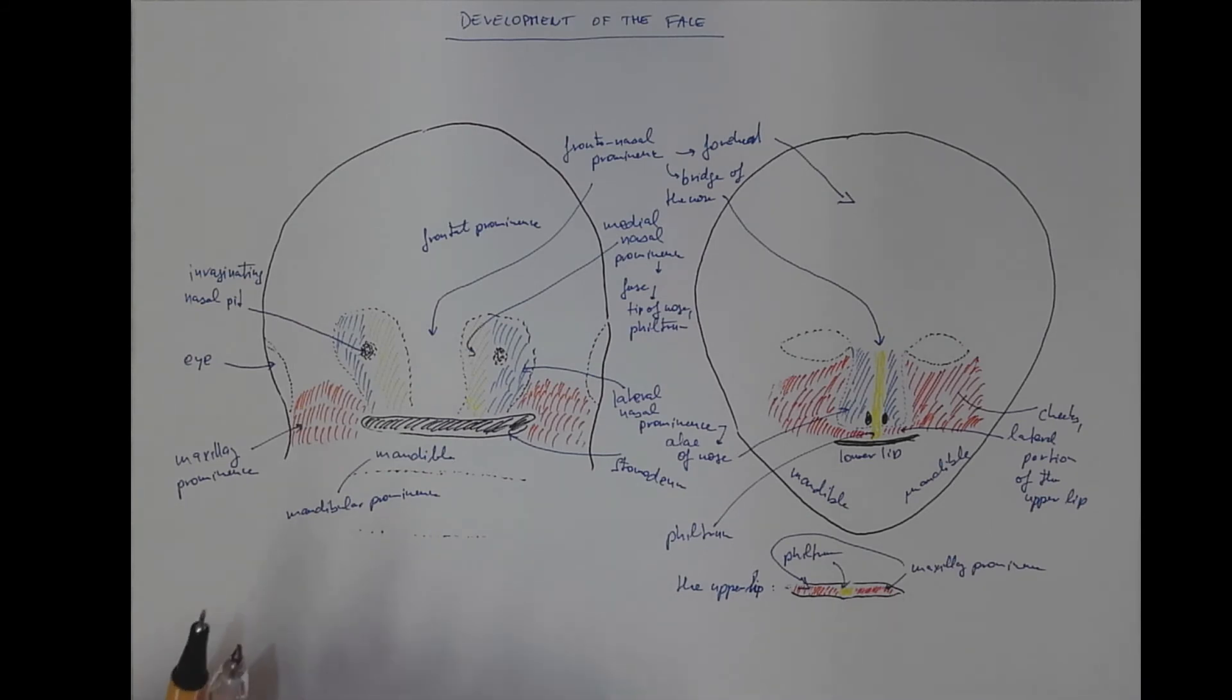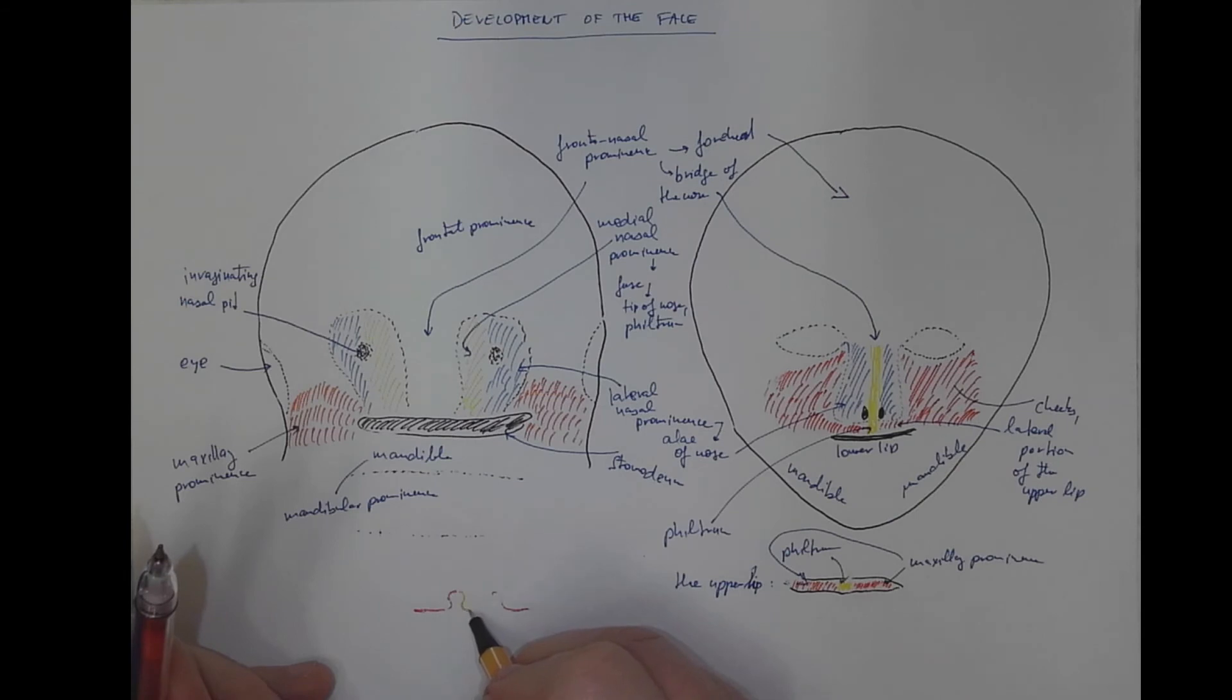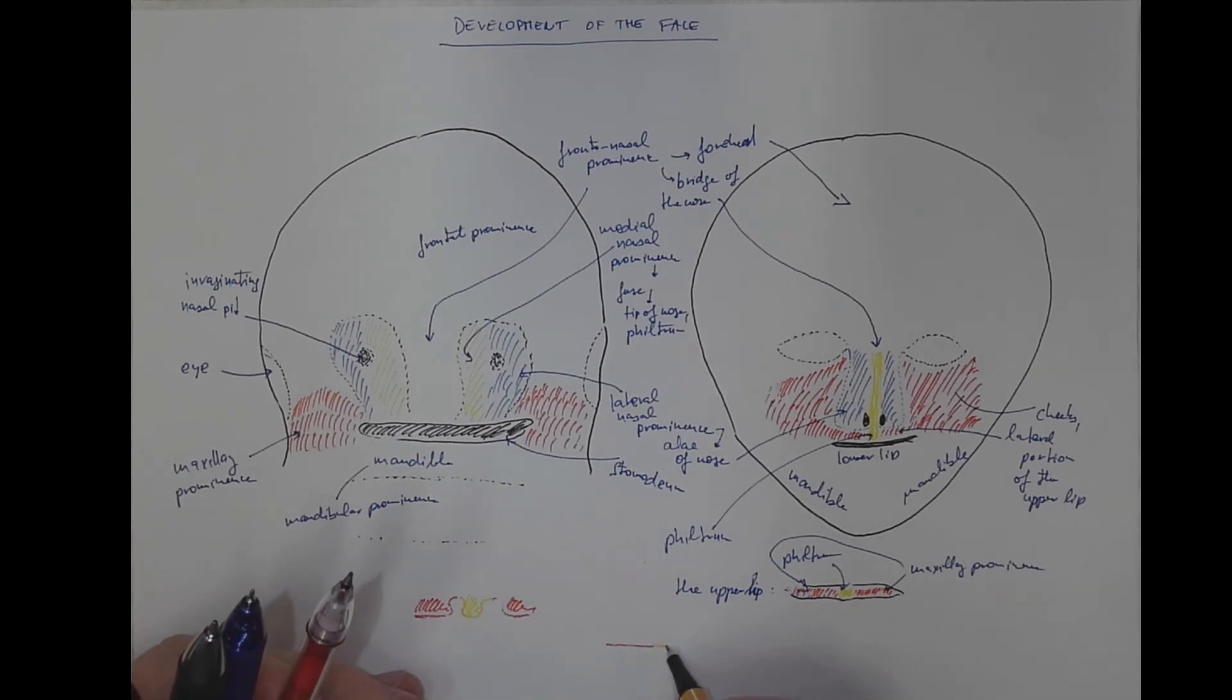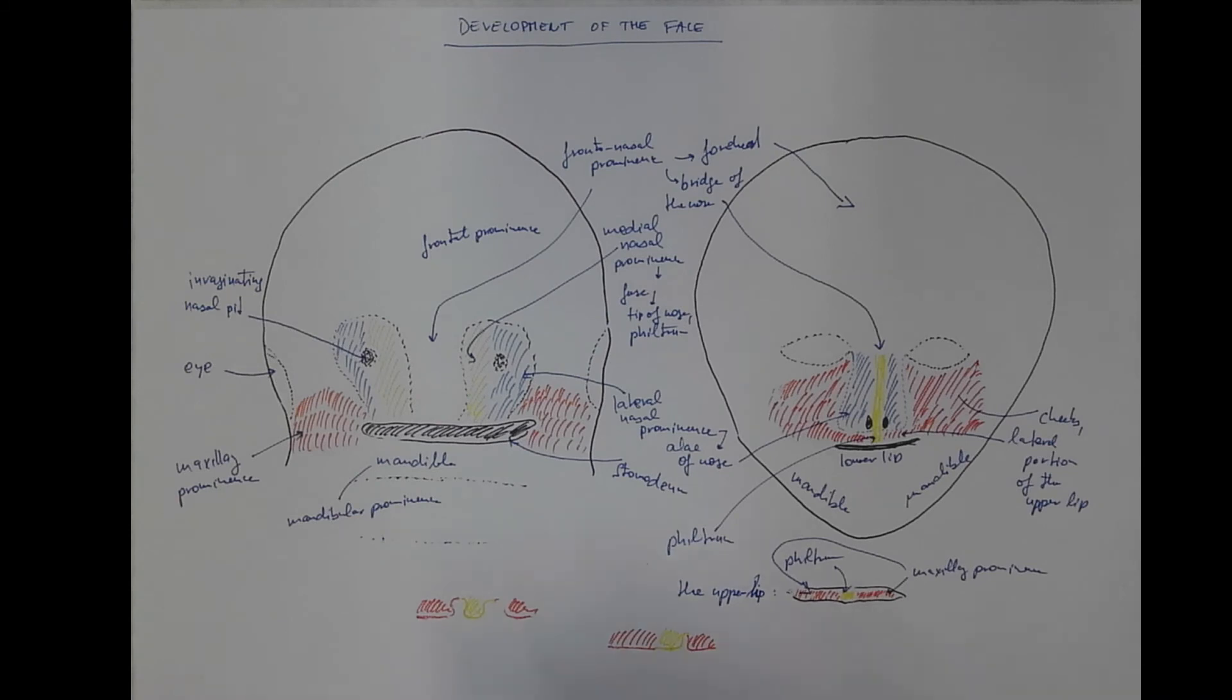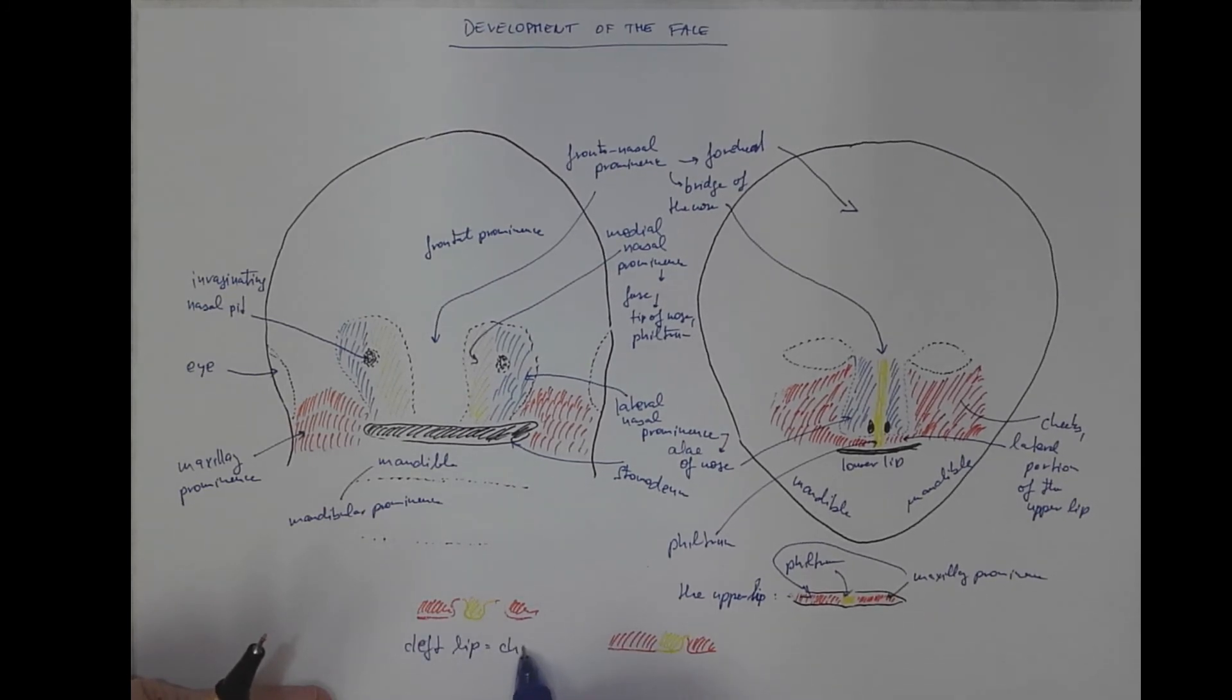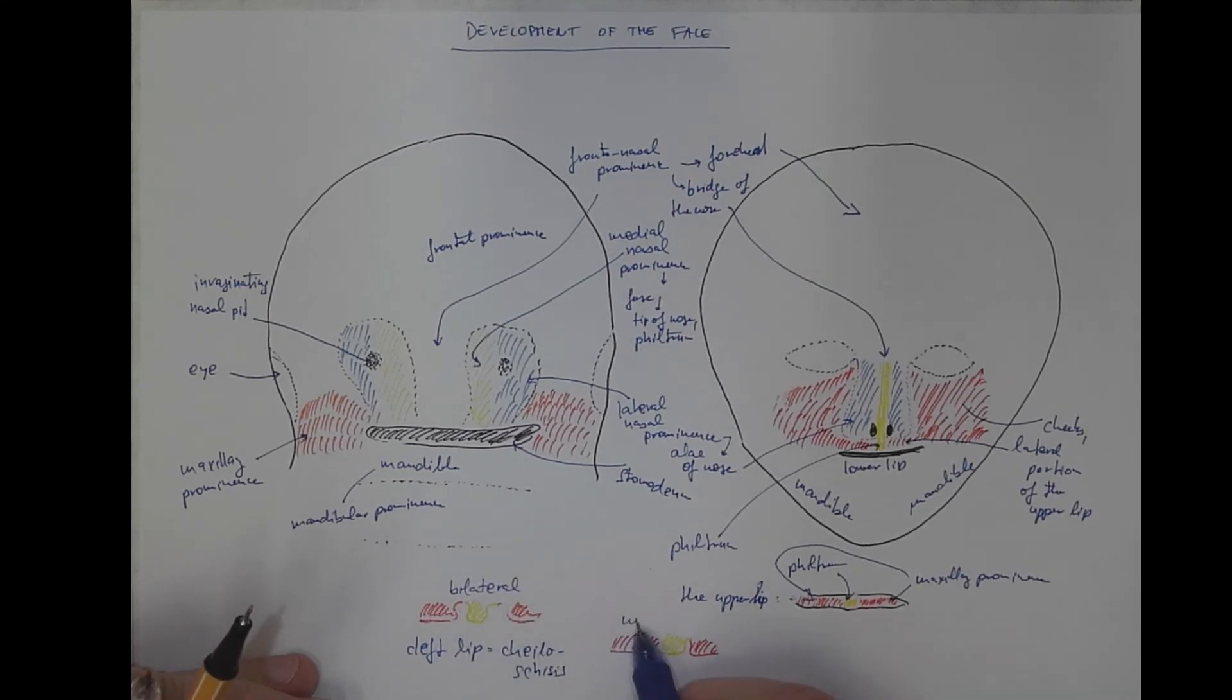The process of fusion of the upper lip might fail, resulting in the cleft lip, which could be on both sides, here with the philtrum that doesn't fuse with the maxillary processes, or on one side only. Here will be the philtrum fused properly, but not here. So we call it the cleft lip or cheiloschisis, which might be bilateral or unilateral.